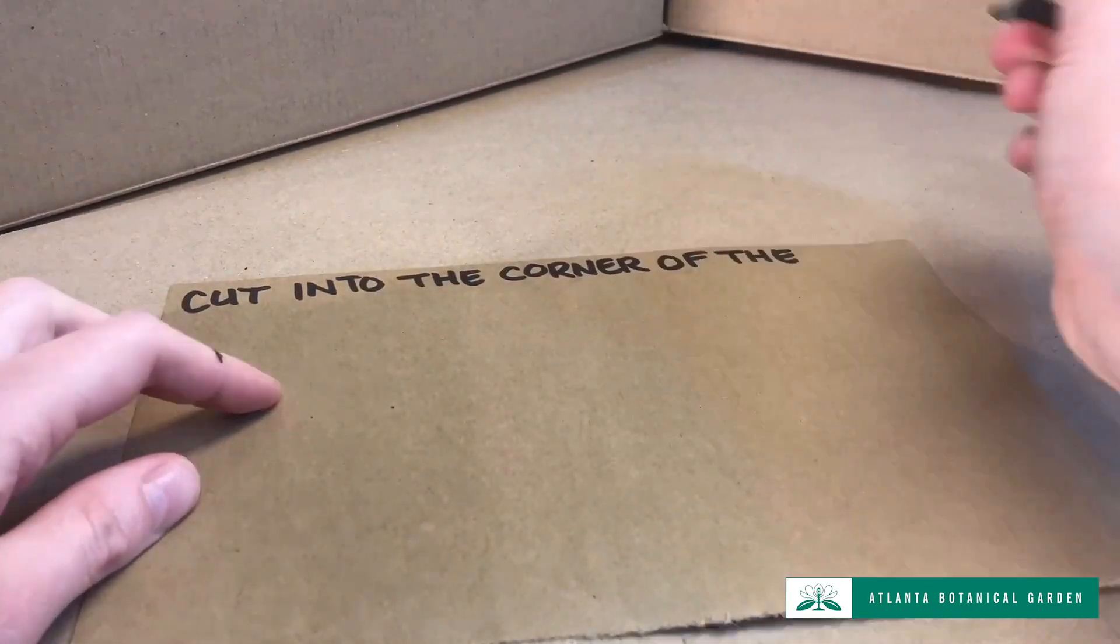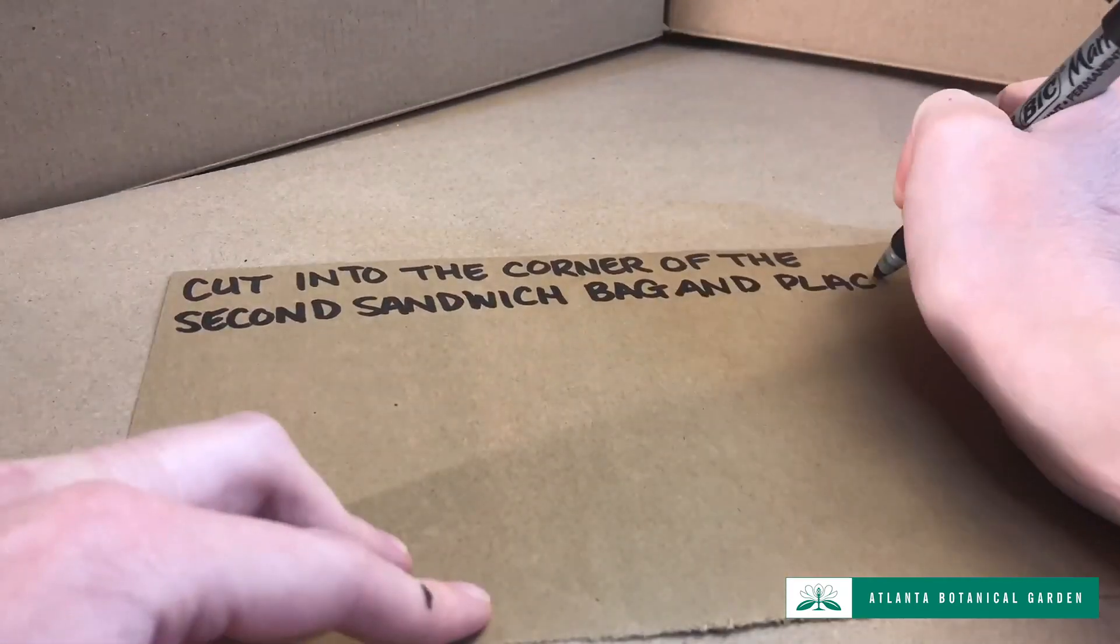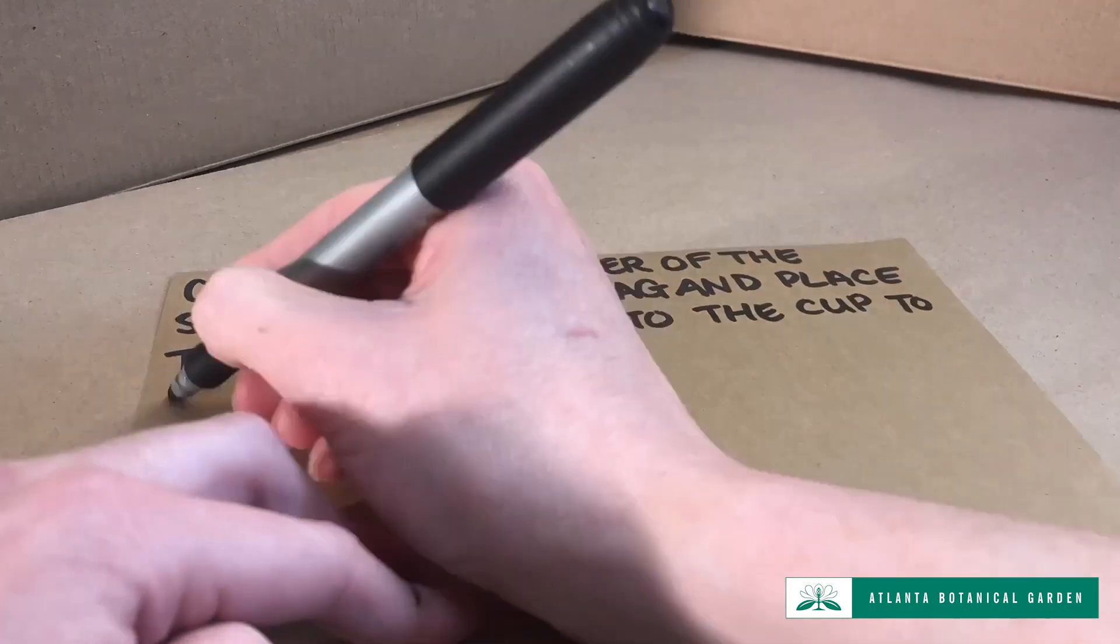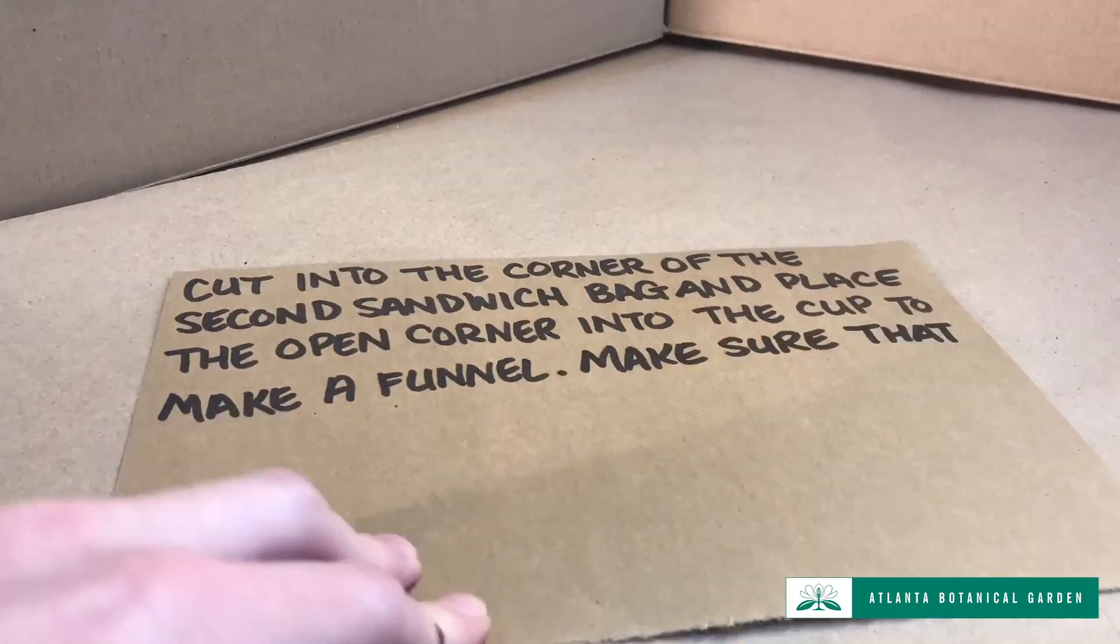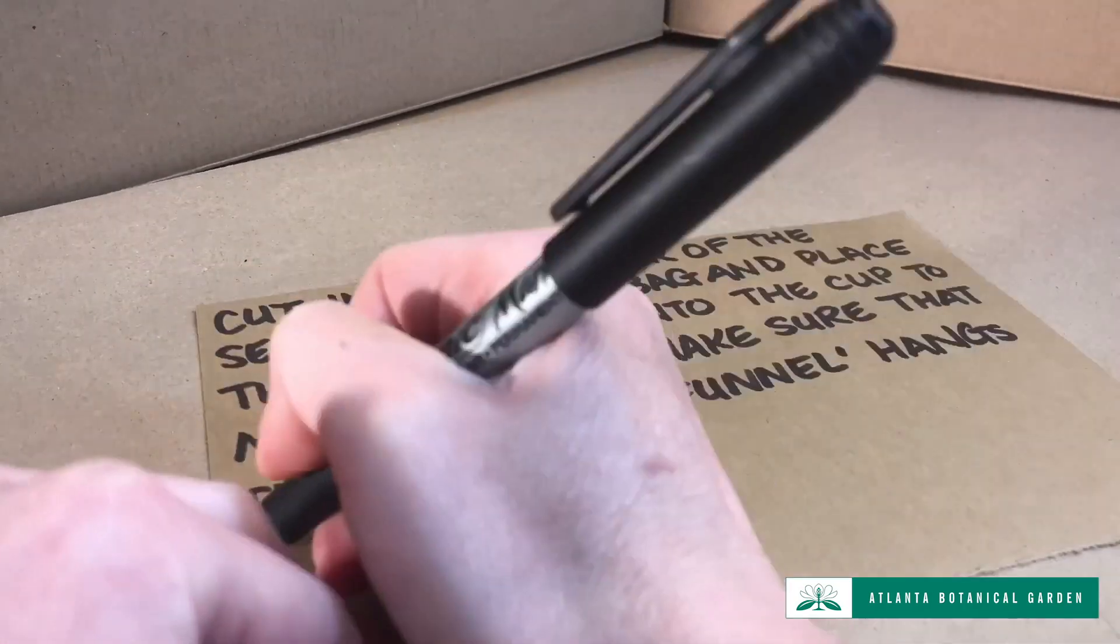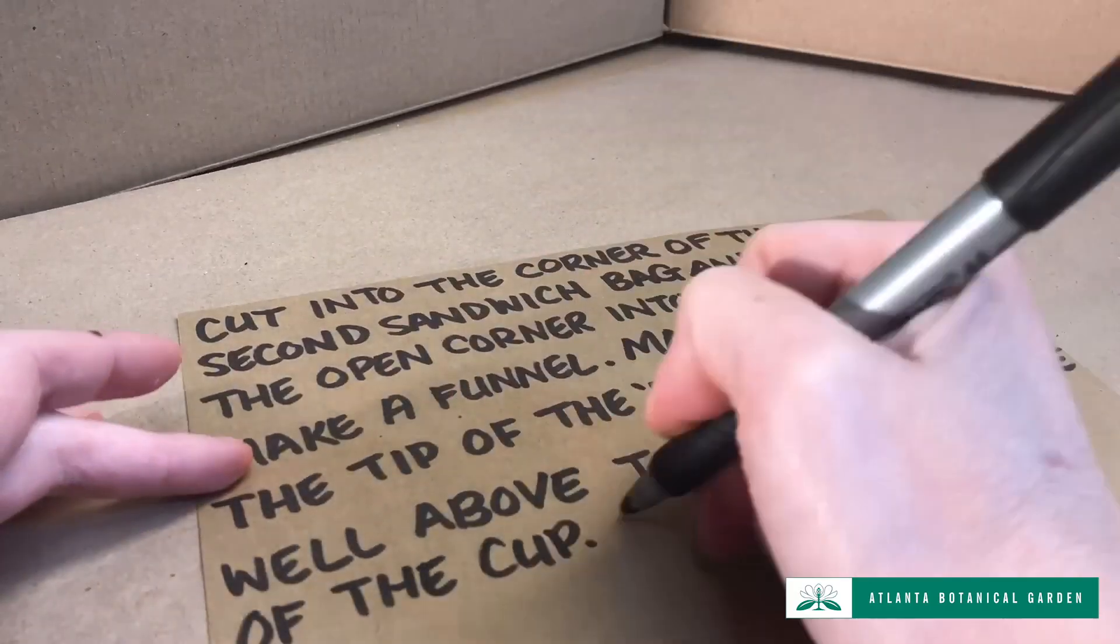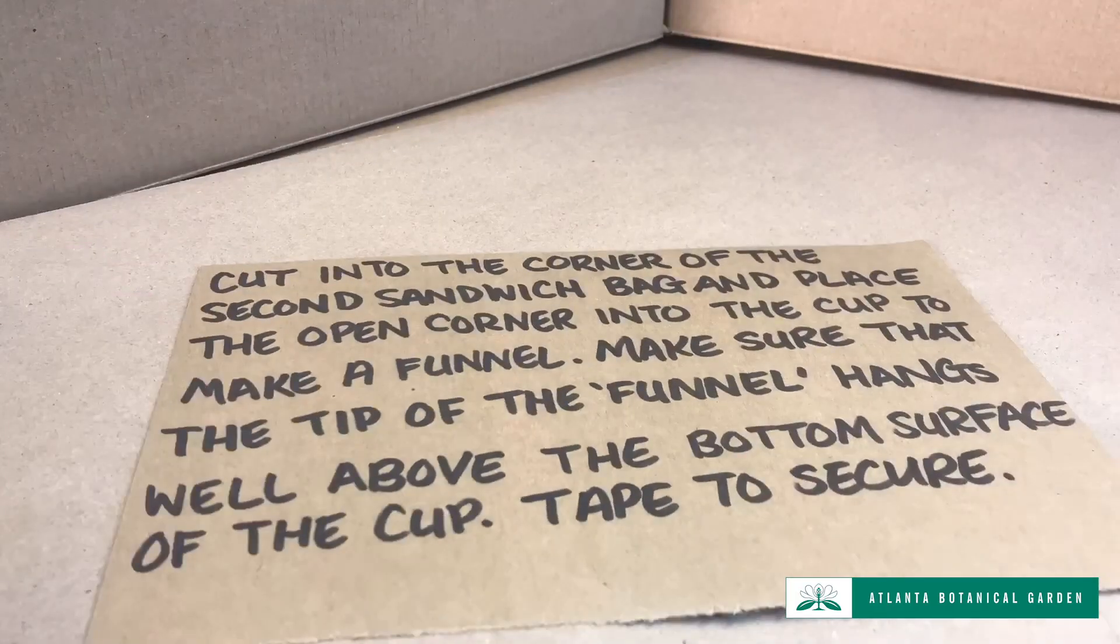Cut into the corner of the second sandwich bag and place the open corner into the cup to make a funnel. Make sure that the tip of the funnel hangs well above the bottom surface of the cup. Tape the outside edges to the cup to secure.